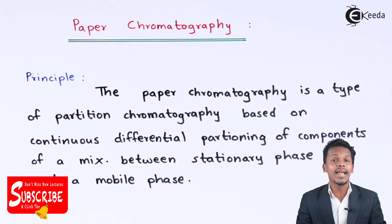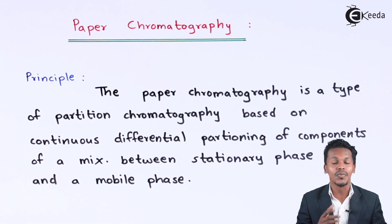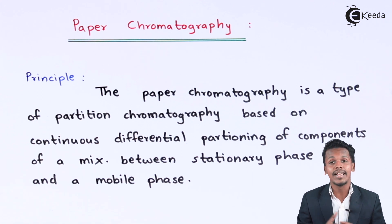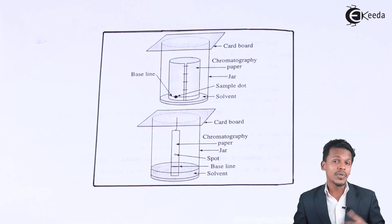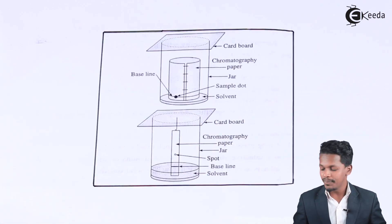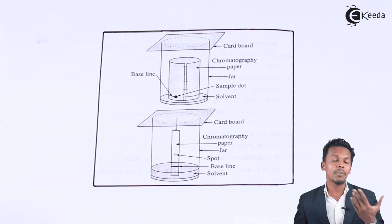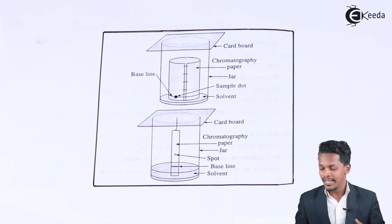That was the principle behind paper chromatography. Now let us understand the technique. I have a diagram to explain the technique of paper chromatography. The procedure is very simple — we have to take a special kind of paper known as chromatography paper.